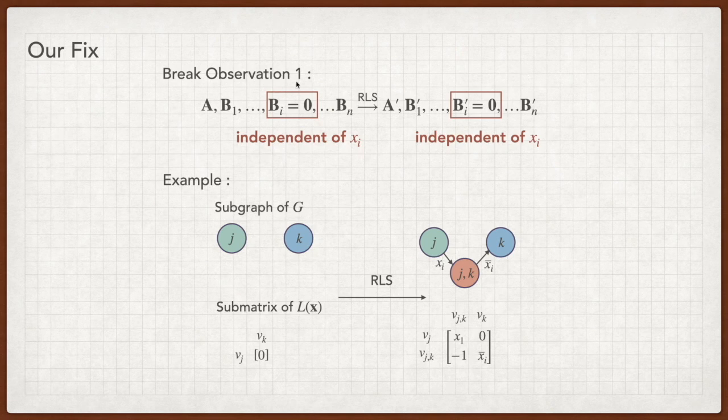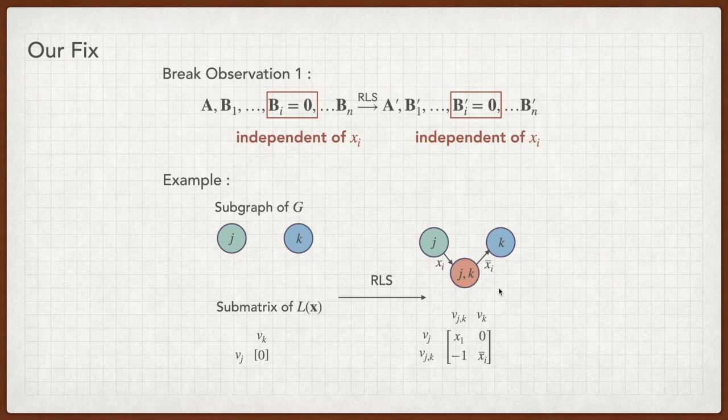To fix the RLS candidate, we aim to break the first observation. For example, when VJ, VK entry is 0, apart from the mentioned three choices, we can have other choices which depend on some XI such like this. Because XI and not XI cannot be satisfied at the same time, there are still no paths from VJ to VK. And by labeling edges with XI or not XI, the matrix BI prime will not be a zero matrix.